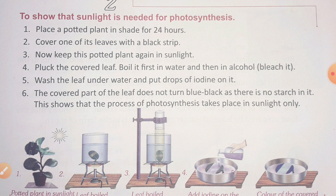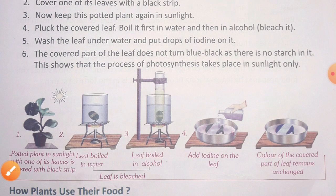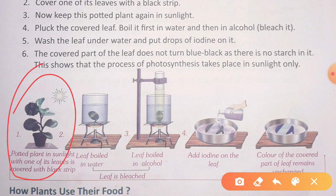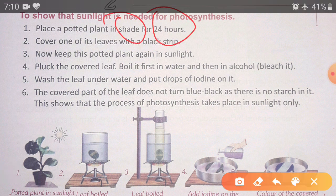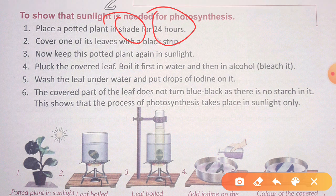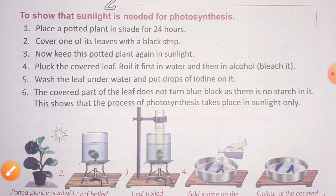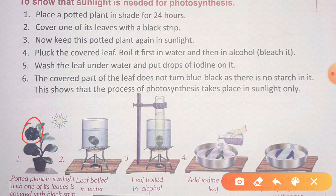How do we do this? Place a potted plant in shade for 24 hours. Then on the second day, cover one of its leaves with a black strip. This means sunlight reaches all other leaves of the plant, but not the covered leaf. Keep the potted plant again in sunlight after covering one leaf.